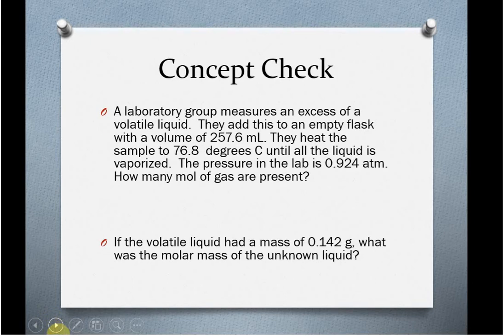So a laboratory group measures an excess of a volatile liquid. They add this to an empty flask with a volume of 257.6 milliliters. They heat the sample to 76.8 degrees Celsius until all of the liquid is vaporized. The pressure in the lab, and therefore the pressure in the flask, is 0.924 atmospheres. How many moles of the gas are present?